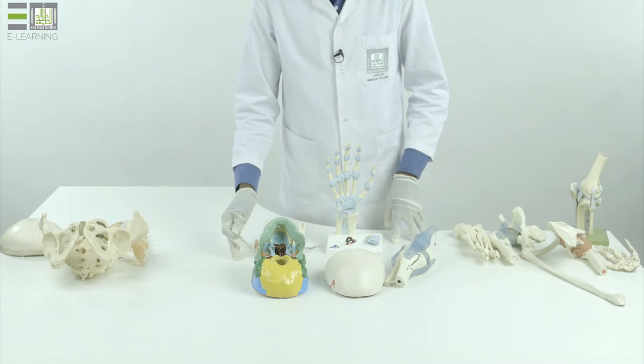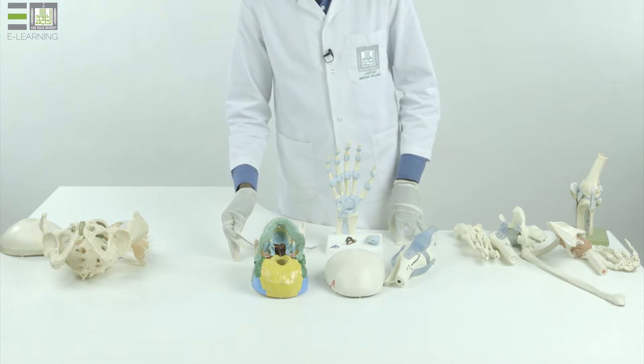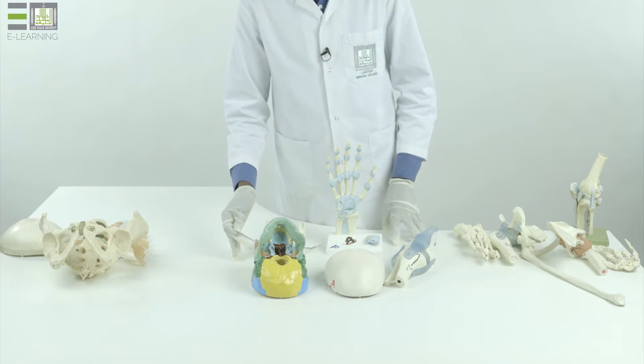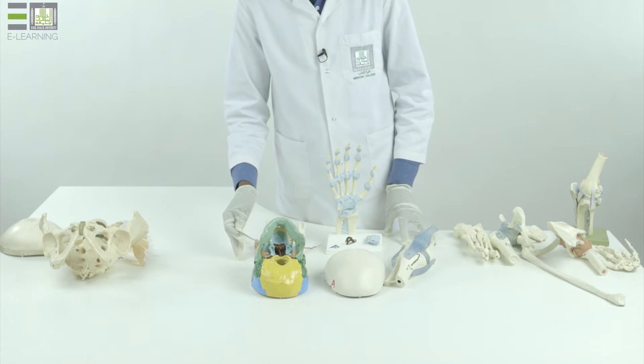There are three main types: fibrous, cartilaginous, and synovial joints. Later they are subdivided according to the degree of movement.